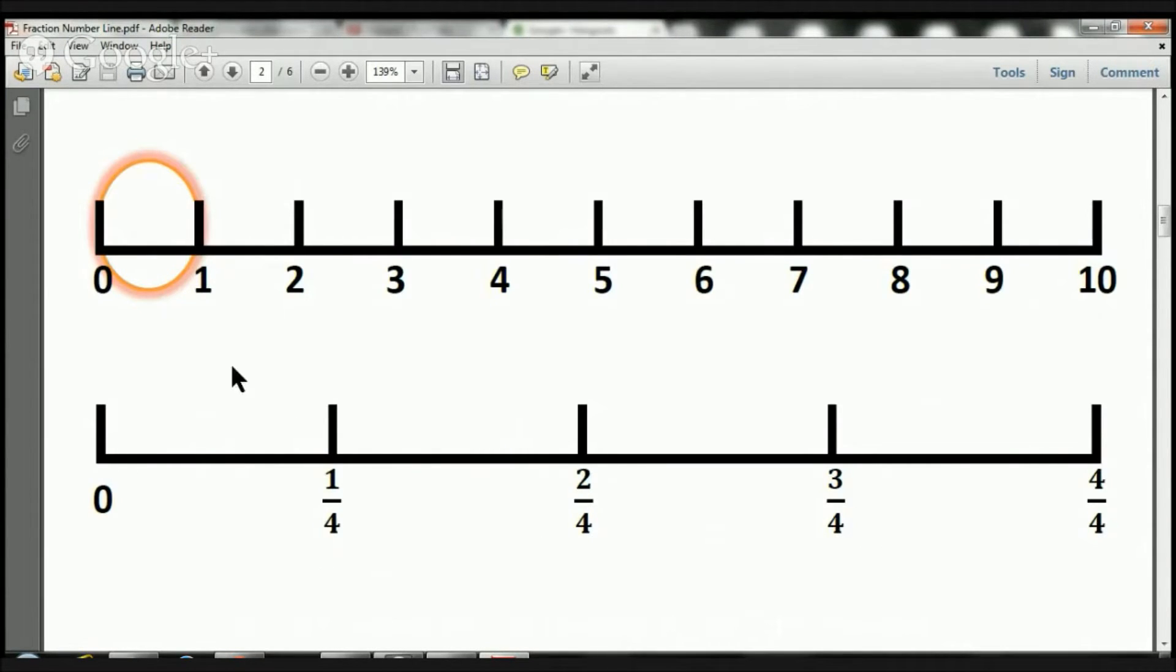From here to here, we have one piece. This is going to be one-fourth. From the zero all the way to here, we've got two pieces, which is two-fourths. And if I split it down the middle, two-fourths is also equivalent to what, boys and girls? That's right, one-half. This is one-half right there. Because we can actually split this up into two pieces. This is one-half also.